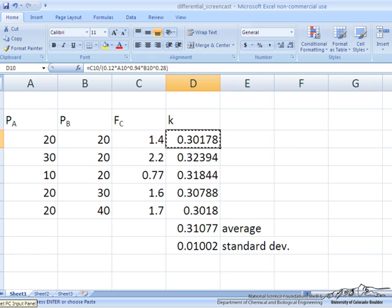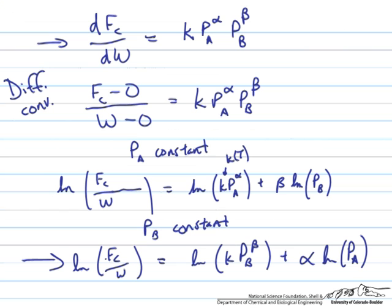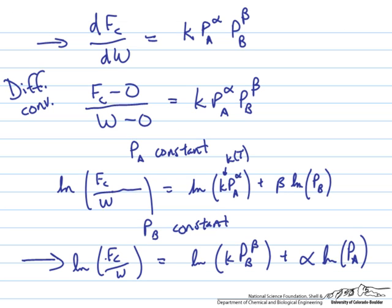Okay, so I've gone ahead and added a new cell here to calculate the value of k as an item in our spreadsheet. And to do that, let's just go back to our development written out over here. So if we take a look at this boxed equation.